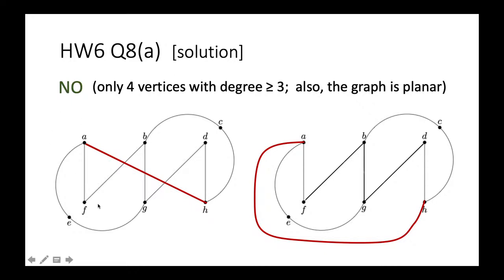In another case, we can also show this cannot be homeomorphic to K3,3 because K3,3 is not planar, but the graph we see here is planar. We can remove the red edge and redraw it so that no edges cross. This is a planar representation of the original graph, showing the graph is planar and therefore cannot be homeomorphic to K3,3.